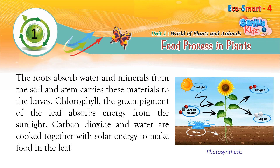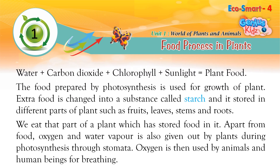The roots absorb water and minerals from the soil, and the stem carries these materials to the leaves. Chlorophyll, the green pigment of the leaf, absorbs energy from the sunlight. Carbon dioxide and water are combined together with solar energy to make food in the leaf. The formula is: water + carbon dioxide + chlorophyll + sunlight = plant food.